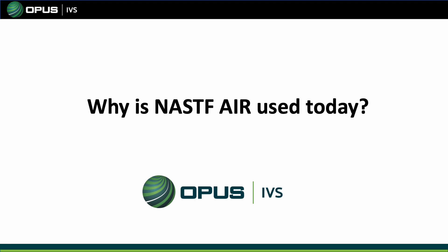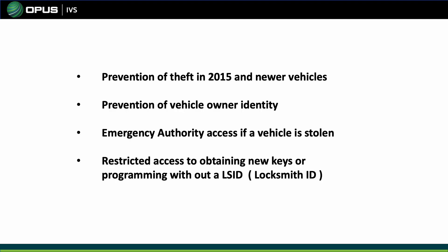Why is NASTIF AIR used today? NASTIF AIR is used for prevention of theft in 2015 and newer vehicles, prevention of vehicle owner identity theft, emergency authority access if a vehicle is stolen, and restricted access to obtaining new keys or programming without an LSID — Locksmith License ID.